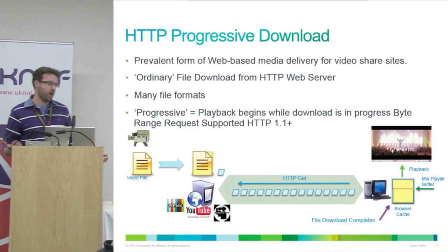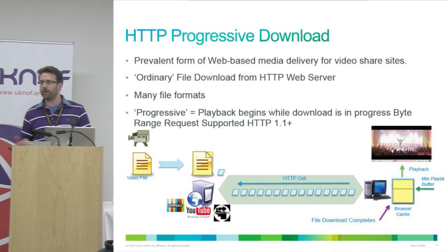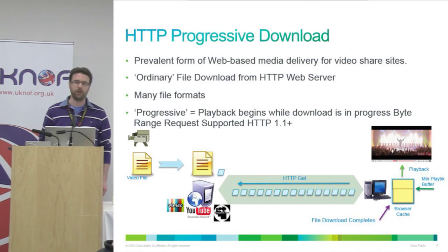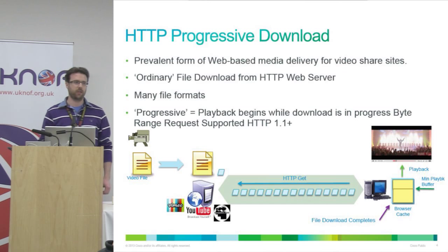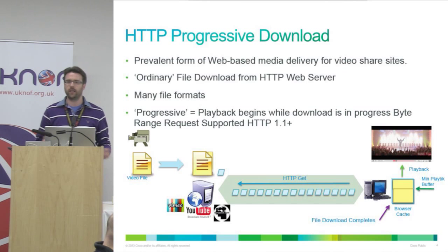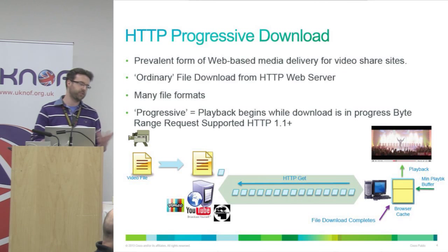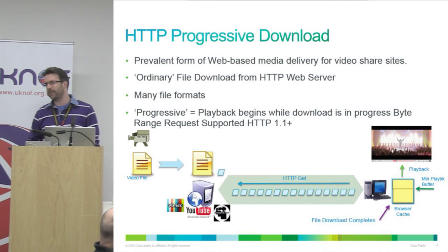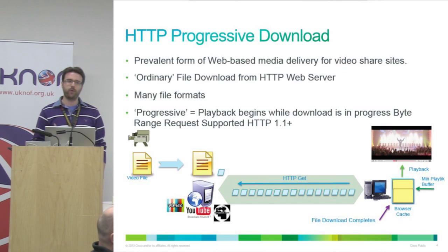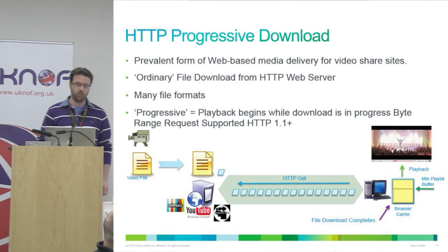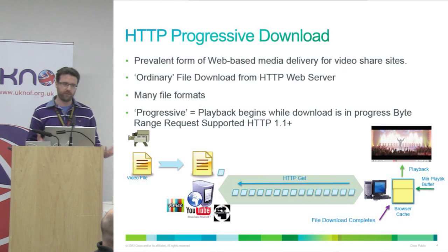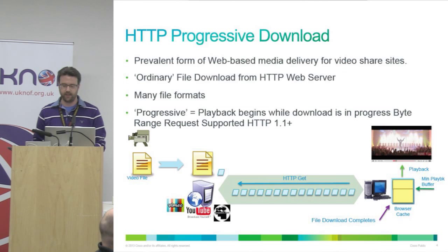So historically, over the last decade, systems were using very primitive ways of distributing video. HTTP progressive download was the number one way. You had a big file that was the encode of your content in a single bit rate, or maybe multiple versions which you selected when you started off. It was an ordinary HTTP download in many formats, whatever the flavor of the day was from your distributor. And it became progressive at the point where HTTP 1.1 was available, and you were able to seek on a byte range rather than restarting the download from the beginning. It's a very primitive model.